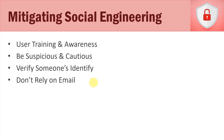Now let's talk about mitigating social engineering. This gets back to policies, procedures, training, and awareness. In all reality, it all comes down to user training and awareness, and this needs to be ongoing — at least every single year there should be some sort of announcement or updated training to keep people aware of the issue of social engineering.